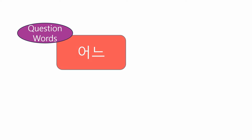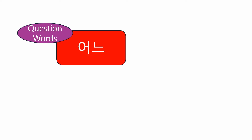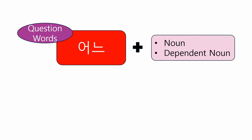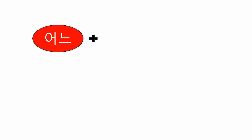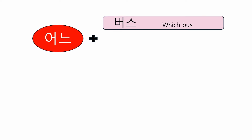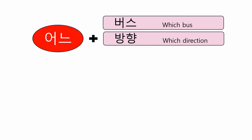안녕하세요. Today, let's talk about a question word, 어느. It follows a single pattern: 어느 plus a noun or dependent noun. In this case, 어느 serves as an adnominal. For example: 어느 버스, 어느 방향, and 어느 거.